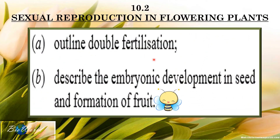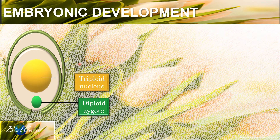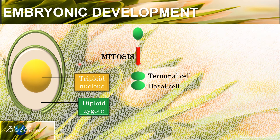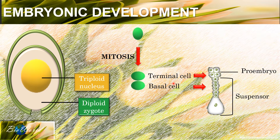That sums up double fertilization. Let's move on to see what happens to the zygote and triploid nucleus. The diploid zygote will carry out mitosis to form two cells: the terminal cell and the basal cell. Both will continue to do mitosis to form a multicellular structure. The terminal cells will form the proembryo while the basal cells will produce the suspensors. The suspensors function is to hold the embryo to the wall of the embryo sac, and it is the proembryo that will develop into the future plant.